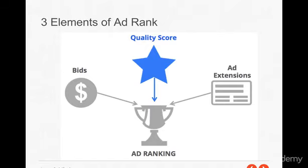A bad example of quality score and relevance: if somebody's searching for red shoes and you have an ad talking about leather shoes — you're serving them an ad that says 'buy our leather shoes' — they click expecting red shoes but then go to a page with leather shoes. They're going to click back. Google wants to serve the most relevant ads to their customers so it's not as intrusive and doesn't block their experience.